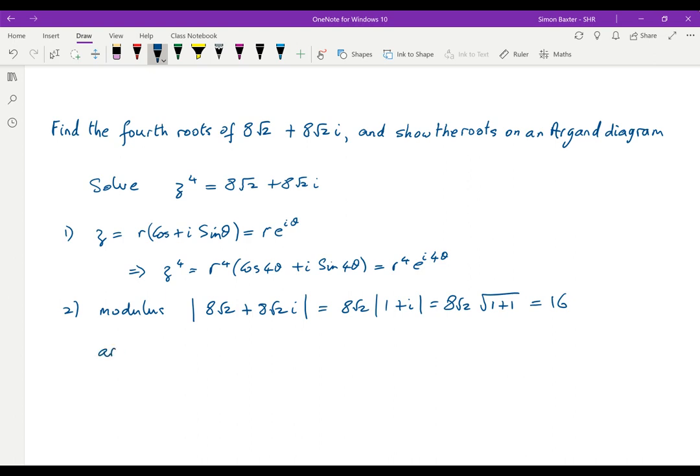And the argument of 8√2 + 8√2i, we can find that quite quickly just by looking at a diagram. 8√2 plus 8√2, same amount out as we go up, the angle therefore must be π/4. So the argument of 8√2 + 8√2i is π/4.